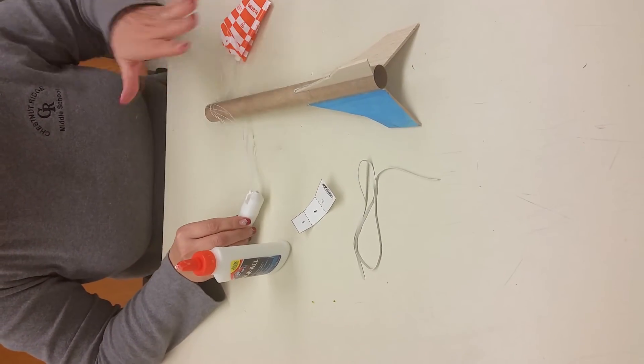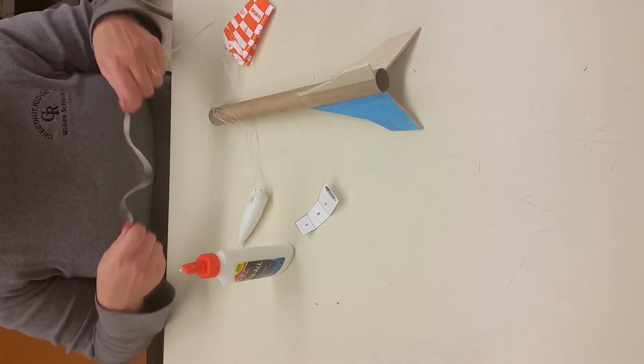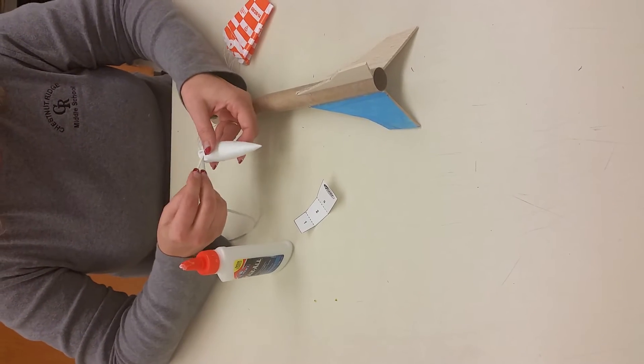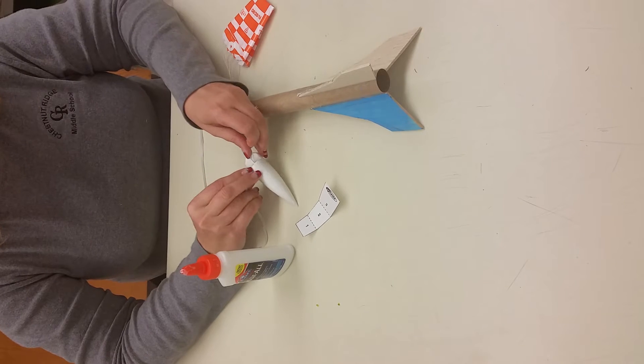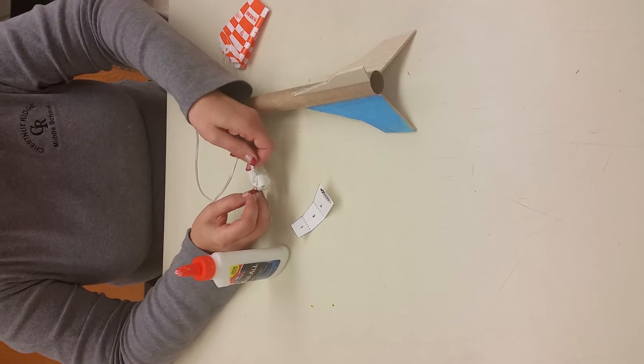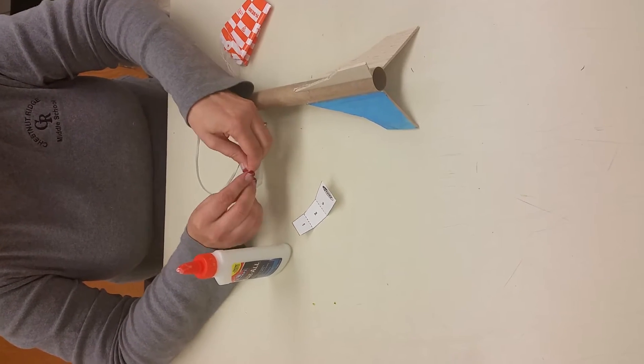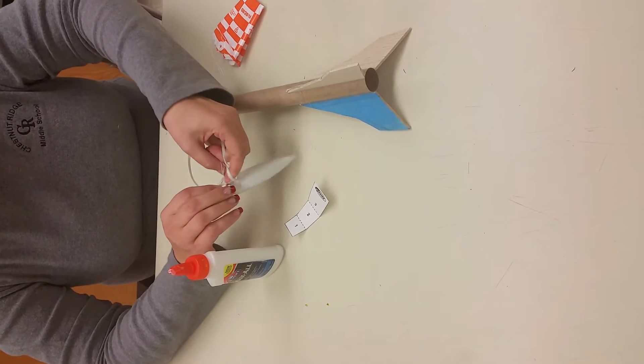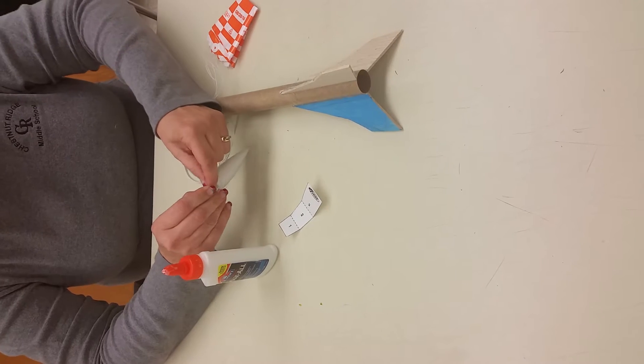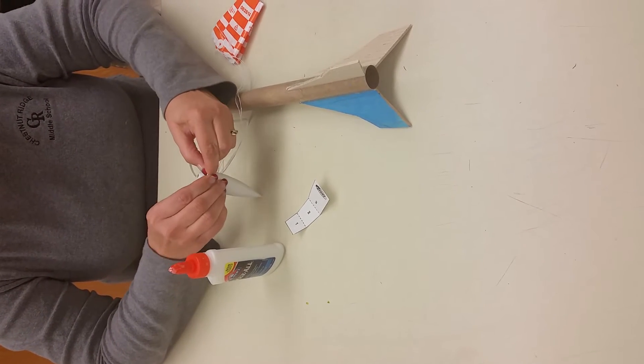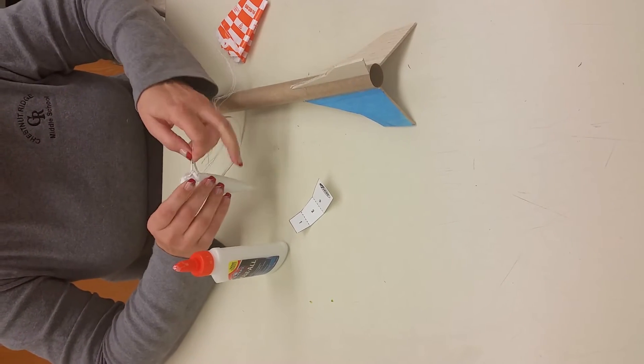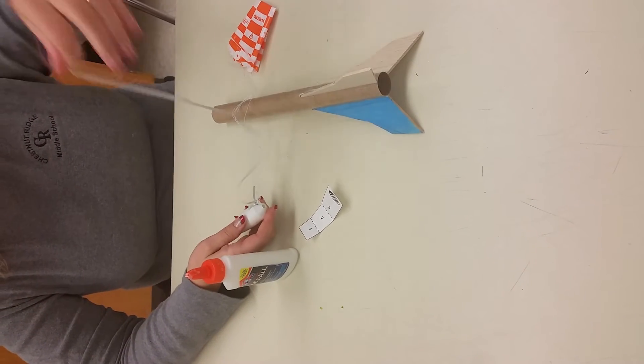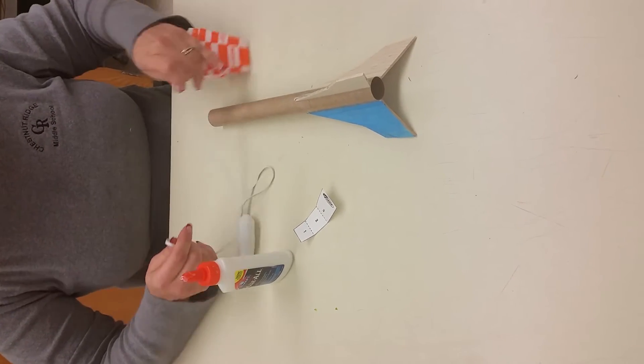Next we're going to attach our shock cord, and we have to attach it to the nose cone and the body tube. So we're going to take one end of the shock cord and just double knot it, which is like when you tie your shoe, it's that very first part. Do that twice. So once, try not to get your shock cord in there, and then twice. So we have that double knotted at the end. Make sure you're at the end of your shock cord.